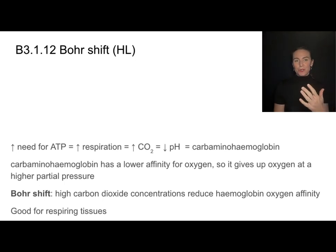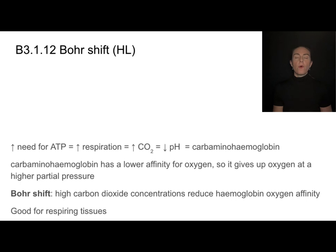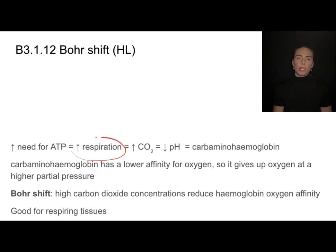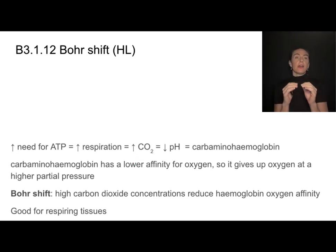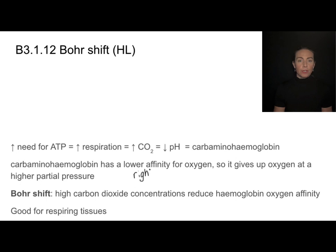Even within adult tissues, hemoglobin can have different affinities for oxygen based on environmental conditions. Consider a scenario where nearby cells are doing something that requires a lot of energy, like muscle contractions. That need for energy kicks up the rates of cell respiration, and the more cell respiration occurring, the more carbon dioxide produced. Carbon dioxide drives down the pH, acidifying the environment, and that causes hemoglobin to convert into a different form called carbaminohemoglobin, which has a lower affinity for oxygen. A lower affinity shifts the oxygen dissociation curve to the right.